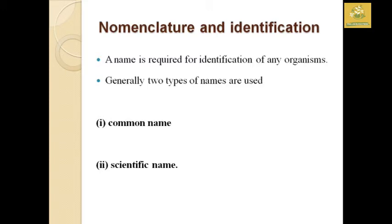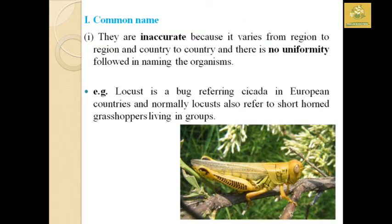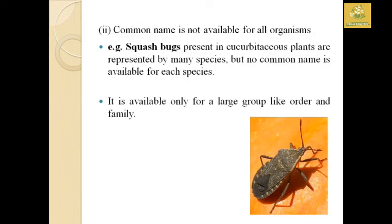For nomenclature and identification, a name is required for identification of a particular organism. There are two names used: the common name and the scientific name. Common names are inaccurate because they vary from region to region and country to country — there is no uniformity. For example, 'locust' is referred to as cicada in European countries. Also, common names are not available for all organisms — squash bugs on cucurbit plants represent many species but have no individual common name.